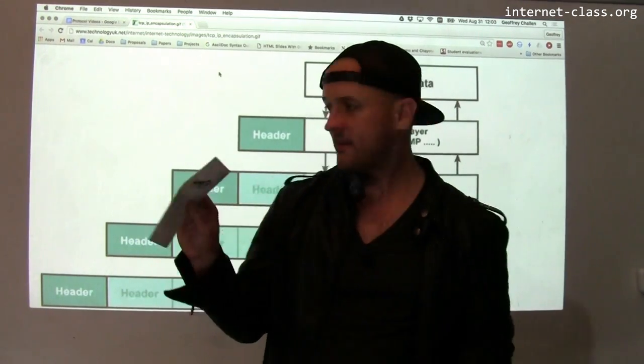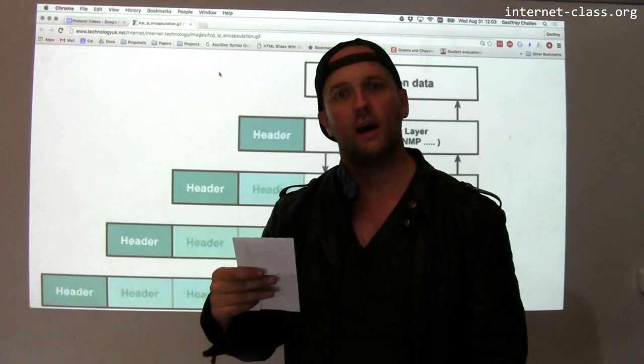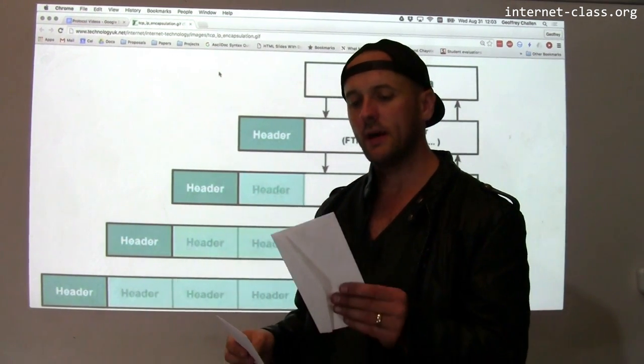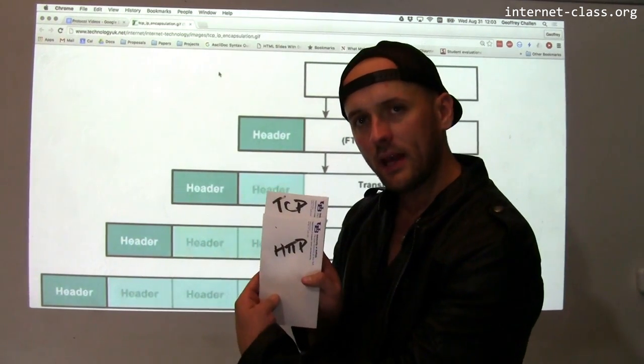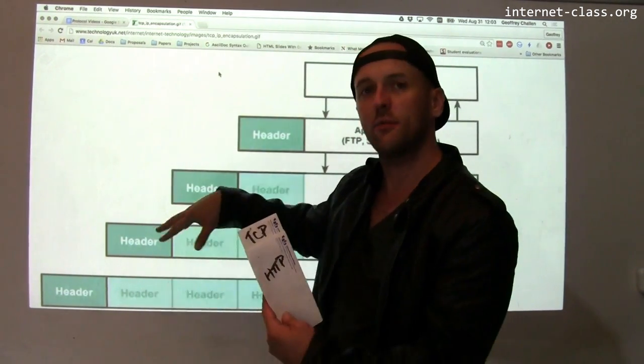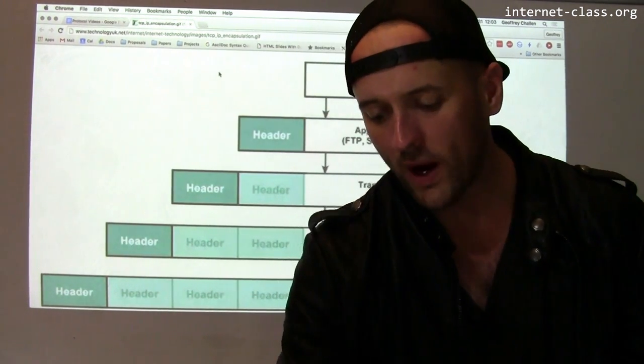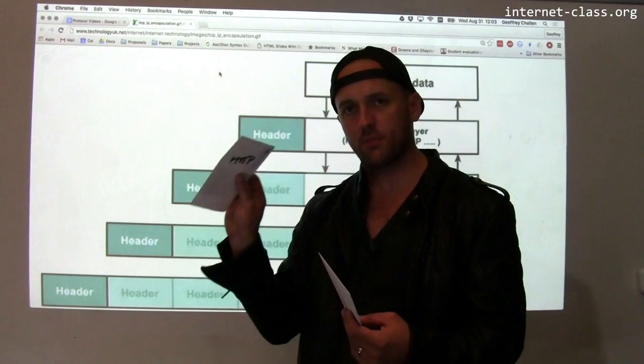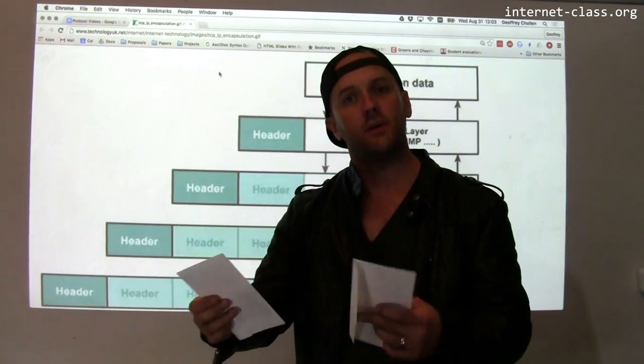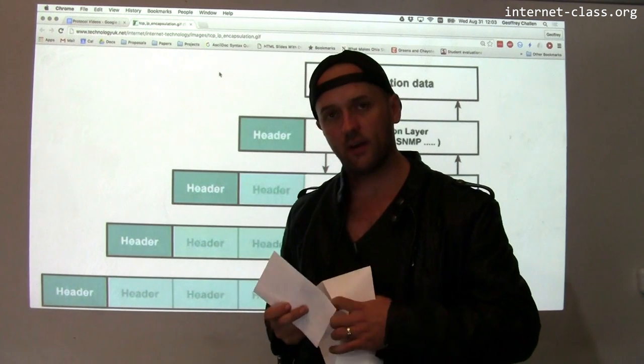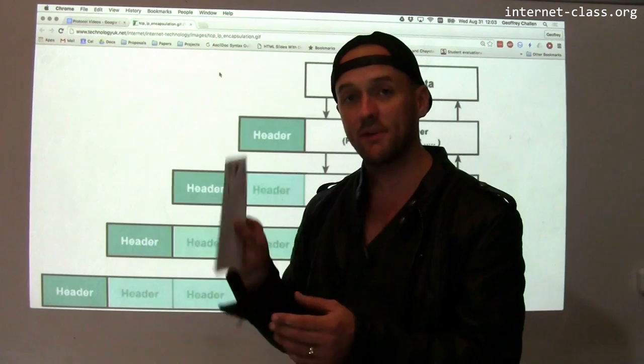So now what HTTP does is HTTP hands this packet down to the TCP layer for reliable transport. So TCP has its own packet. You can see that the TCP packet is now a little bit bigger than the HTTP packet. And the reason is TCP needs to add some extra information to the packet. It might have to put a note where in the image this particular part goes so that when all of these packets arrive at the destination, they can be reassembled into this very exciting picture of my cat. So I put the HTTP packet in here, and now I have a TCP packet.